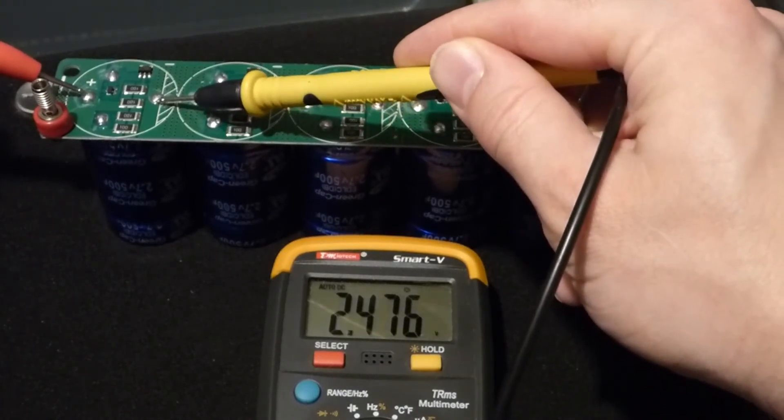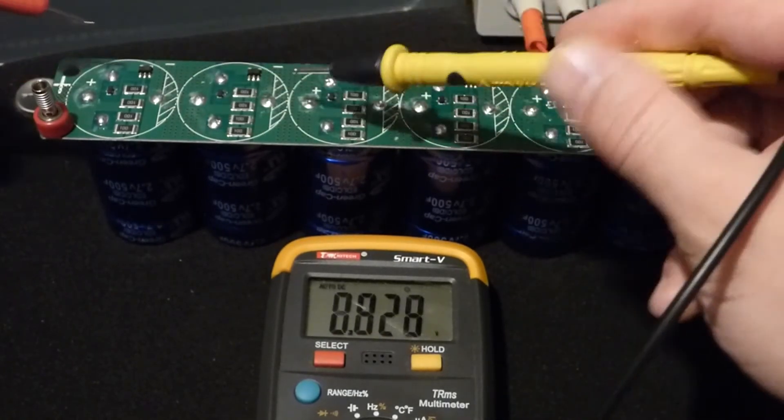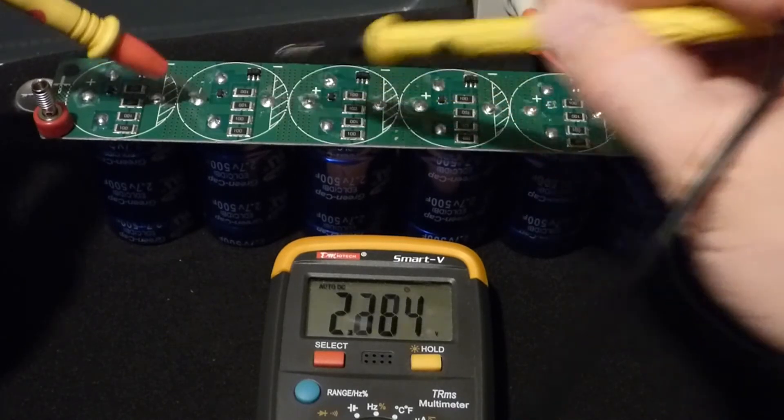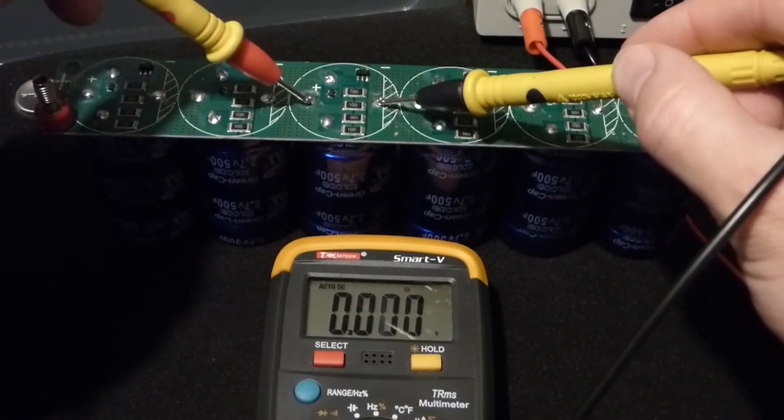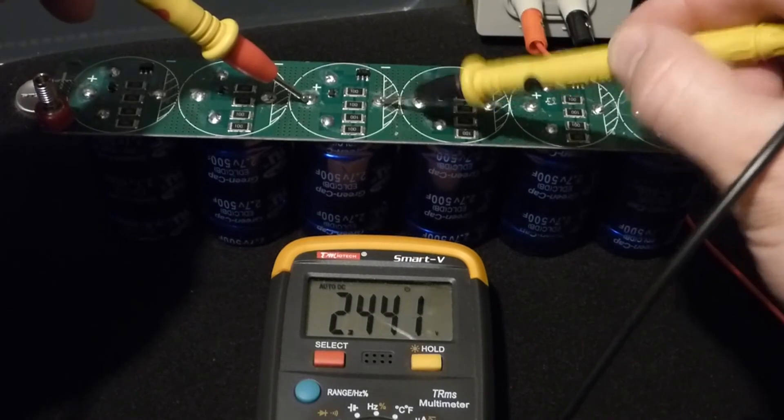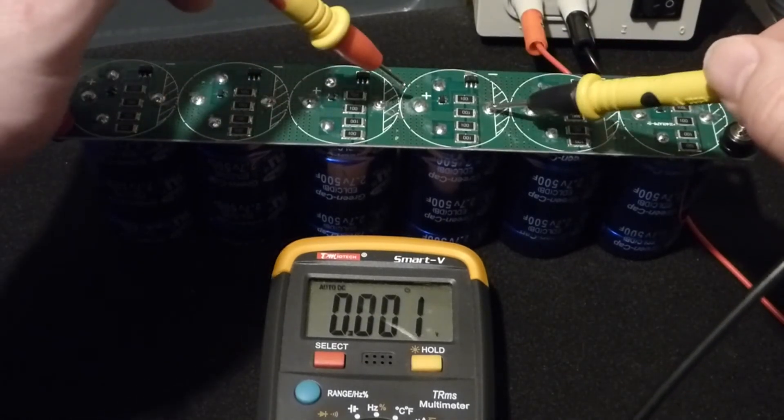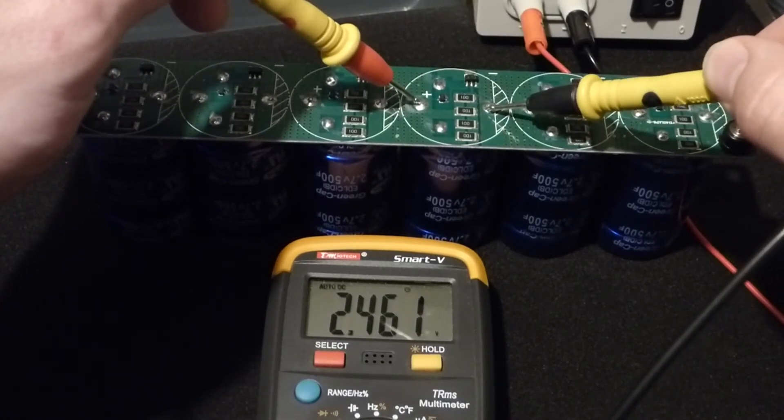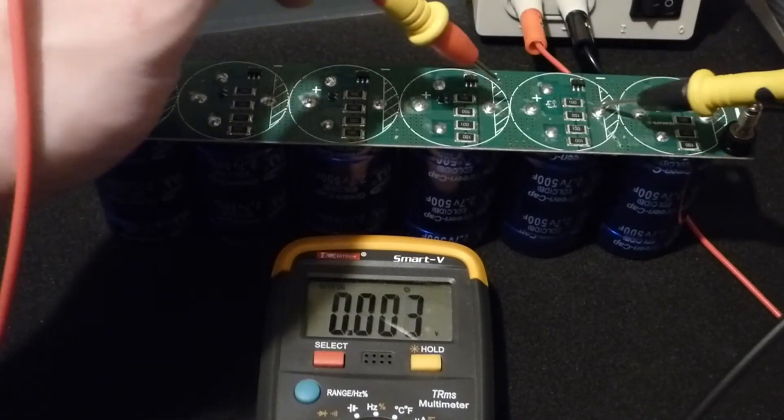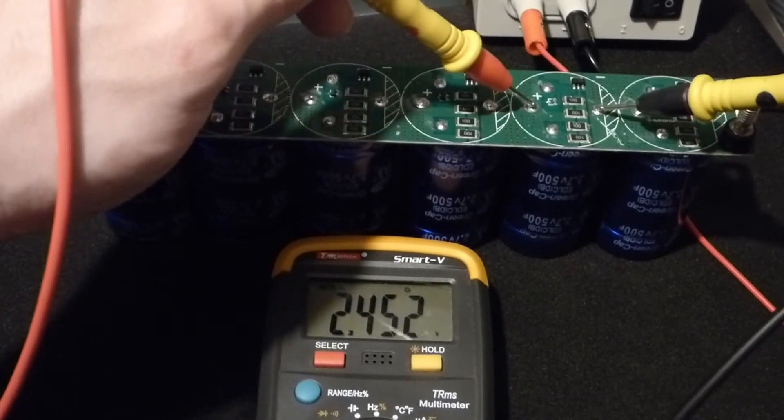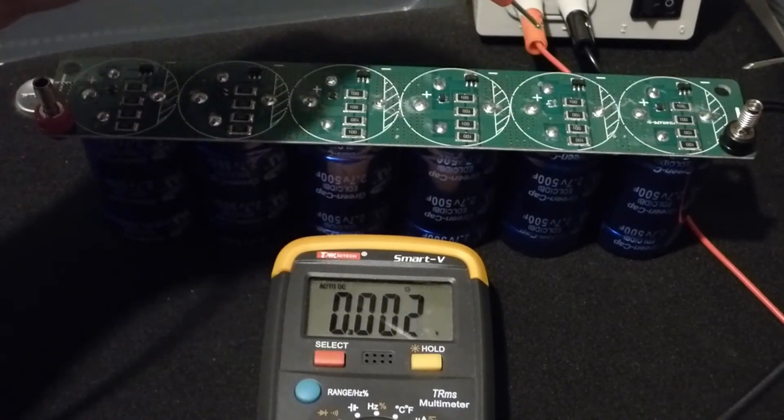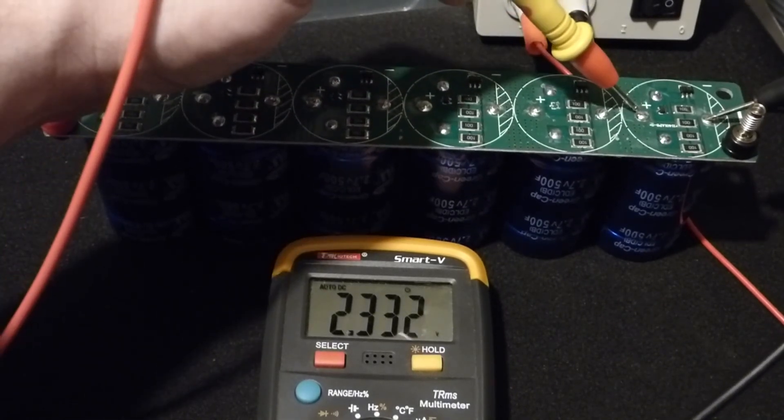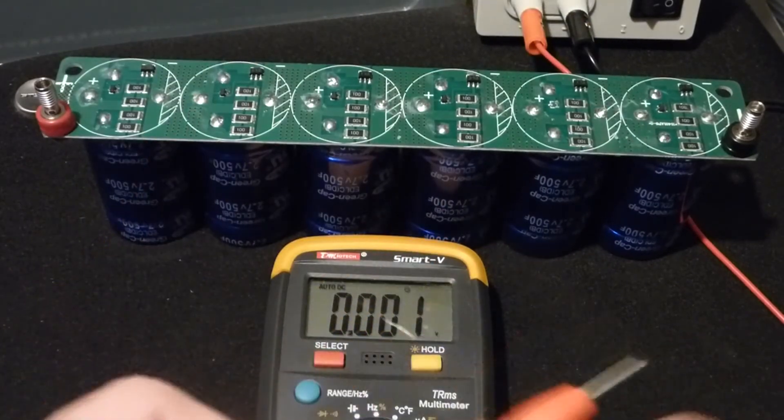We got about 2.4 or 2.5 volts on that one in that range. And then this one about 2.2. And again 2.4 towards 2.5. And again between 2.4 and 2.5. And again. And finally. And that one's close too. So none of them went over.